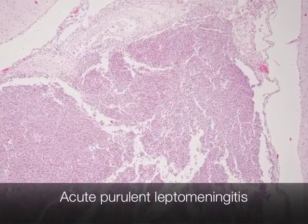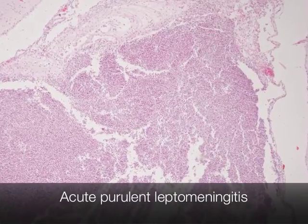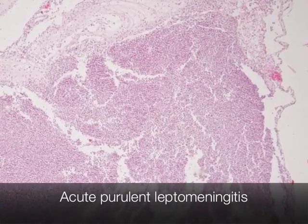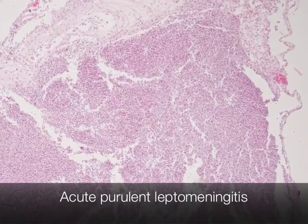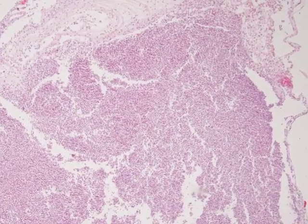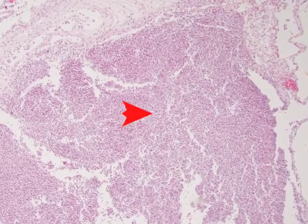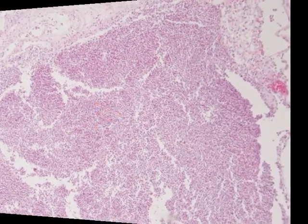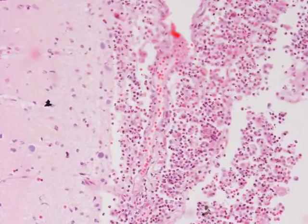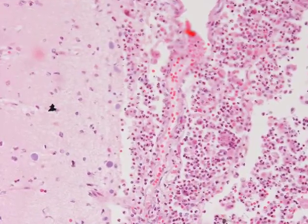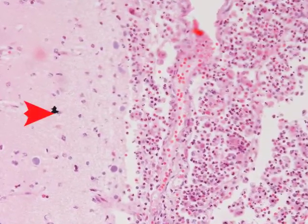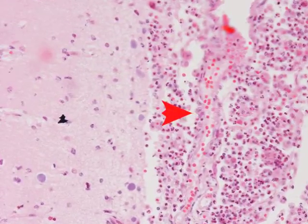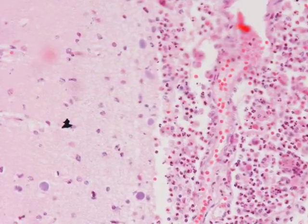This is a section of brain from a patient who died from acute purulent leptomeningitis. You can see that the subarachnoid space is distended by the purulent exudate. This is a higher power view showing normal brain tissue on the left, and on the right is the purulent exudate composed predominantly of neutrophil polymorphs.